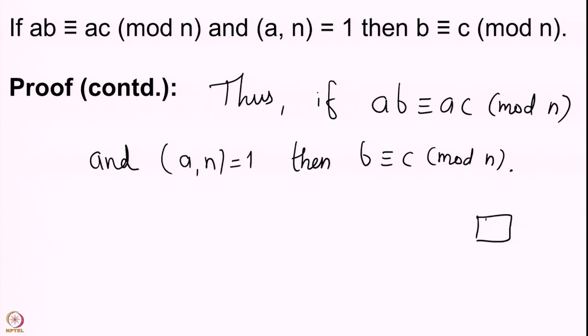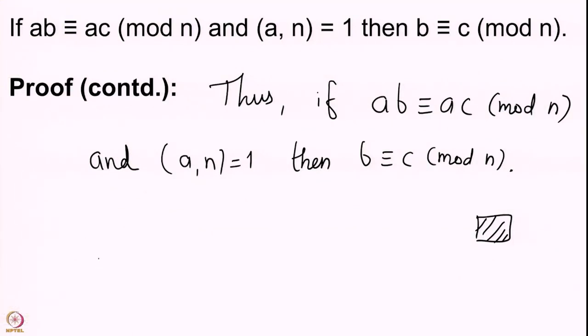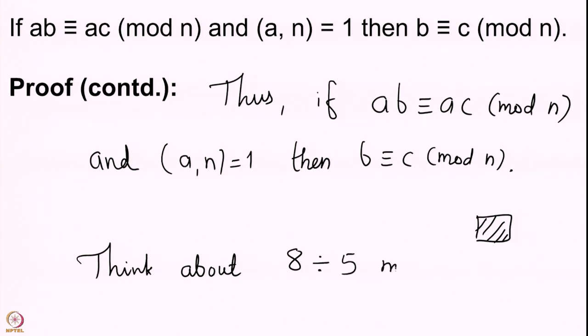This is quite nice: in integers we are not always able to divide by something, but here you can divide by elements which are coprime to n. For example, dividing 8 by 2 modulo 12 would not be possible — or you may get multiple solutions — but dividing 8 by 5 modulo 12 would still be possible. Think about 8 divided by 5 modulo 12.